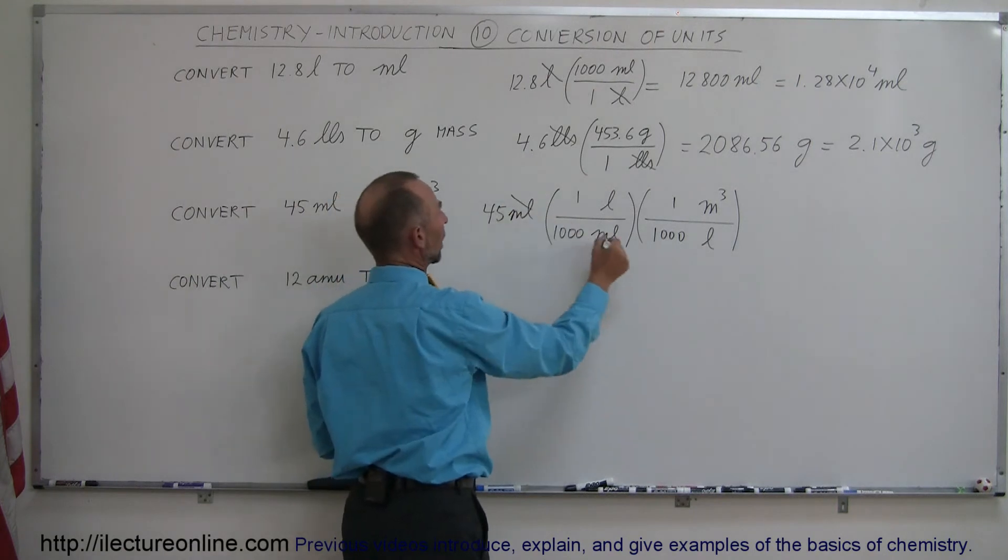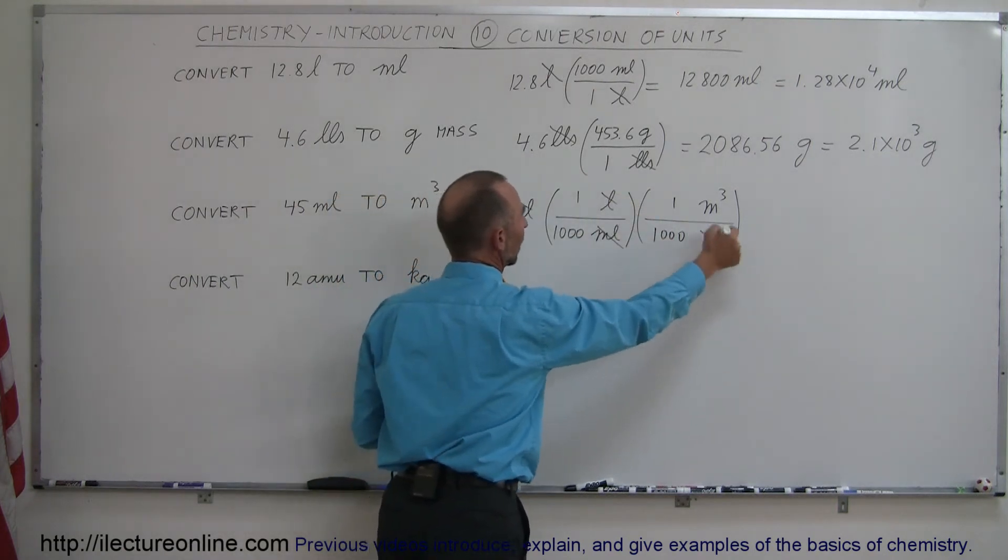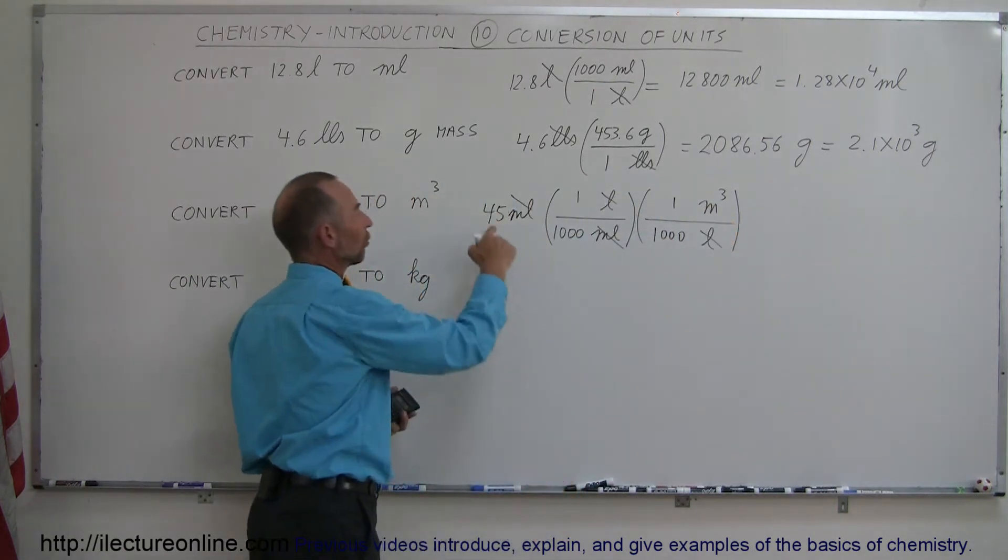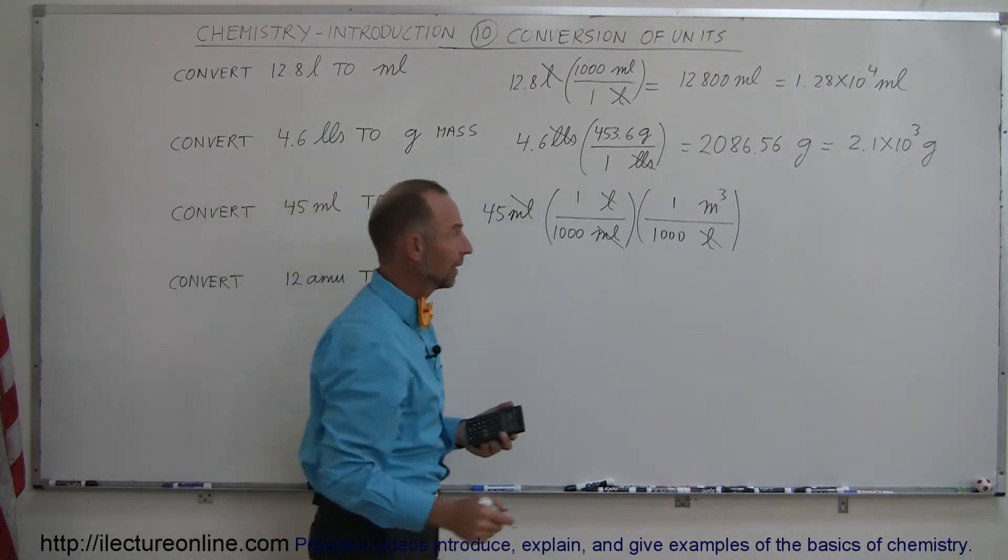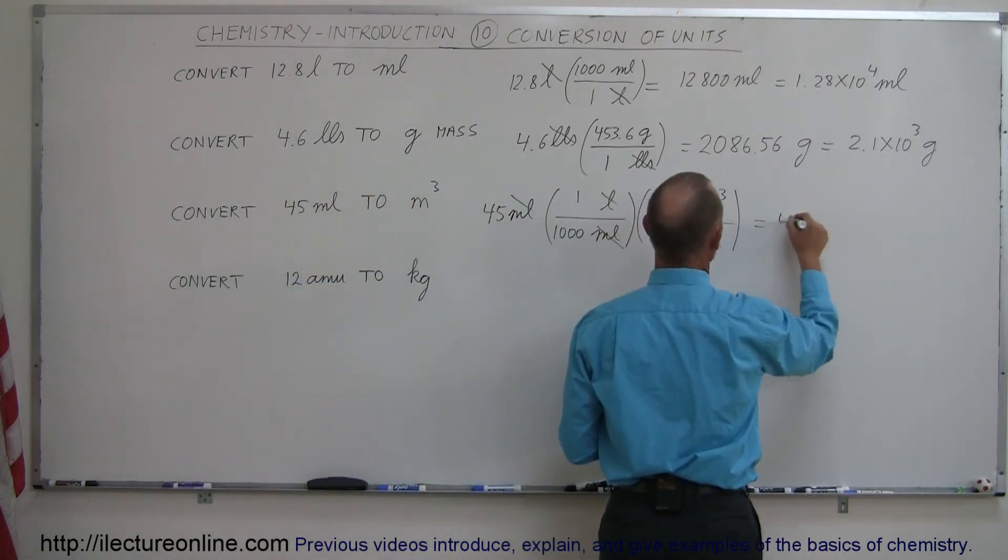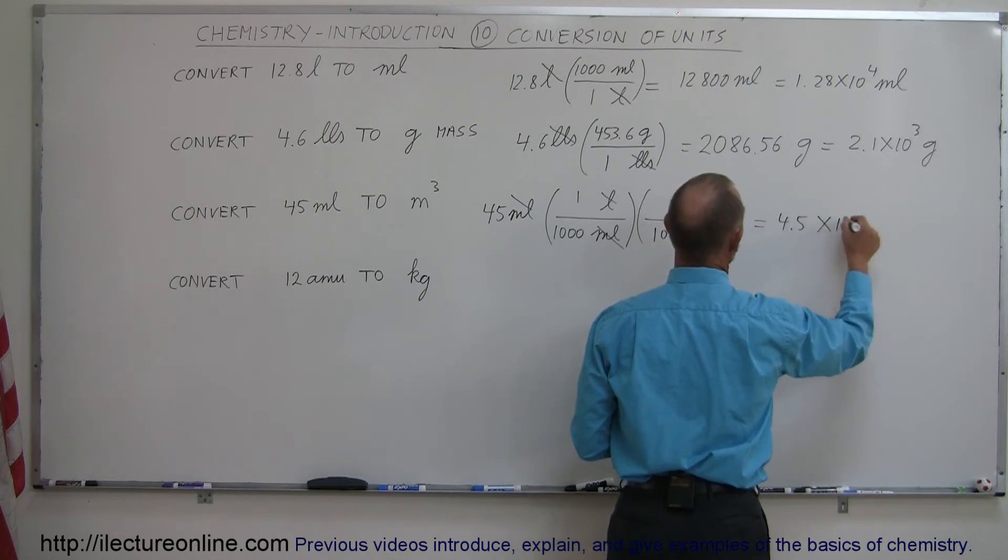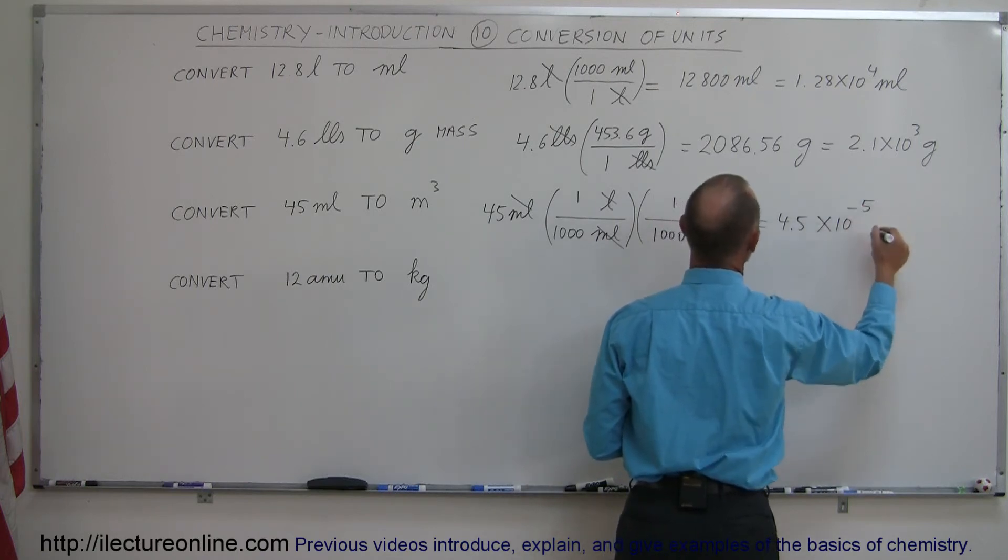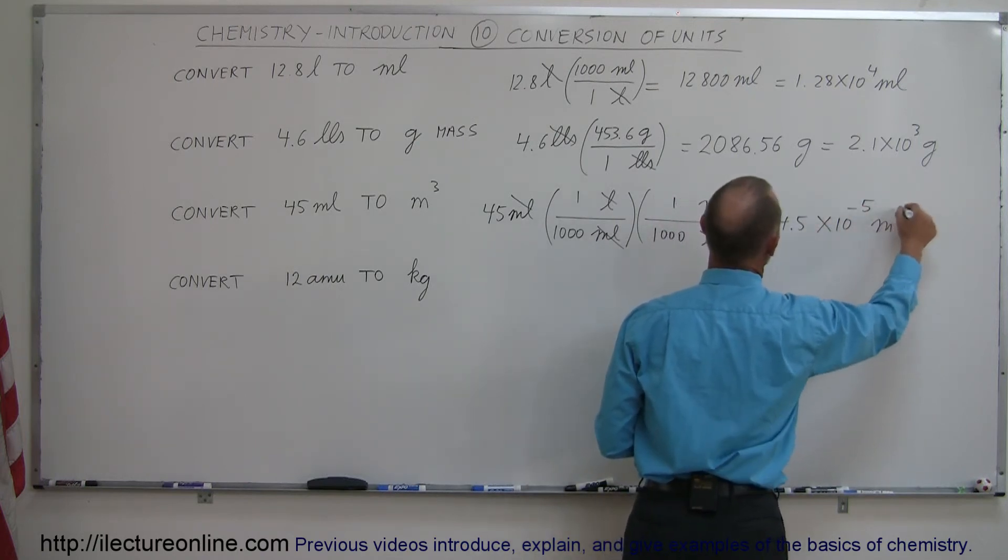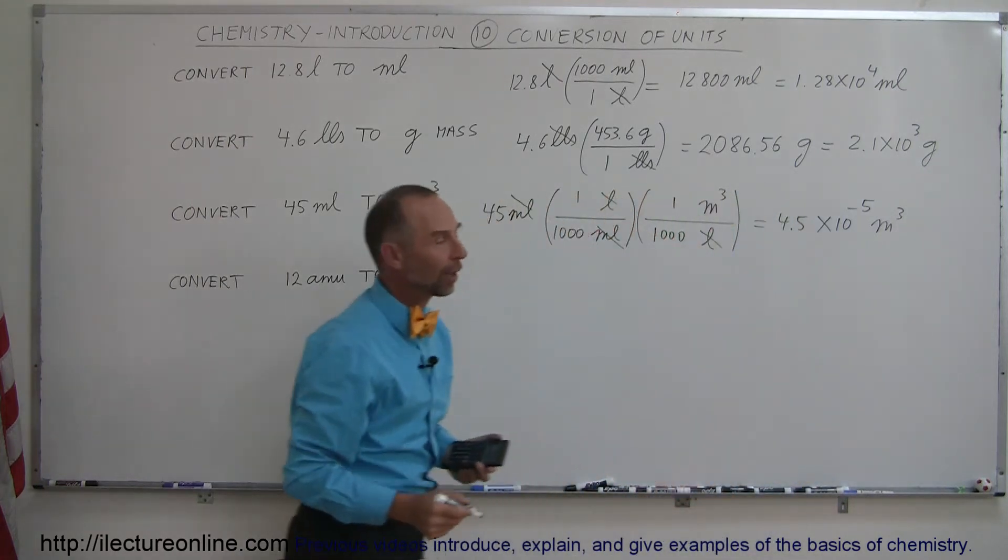Milliliters will cancel out, liters will cancel out, we're left with cubic meters. So 45 divided by that equals 4.5 times 10 to the minus 5. And that would be cubic meters. That would be the proper way of writing that.